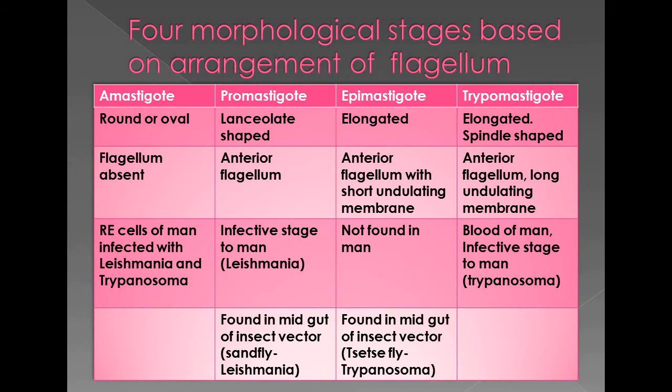So the four forms are: Amastigote, Promastigote, Epimastigote, and Trypomastigote. Always remember the fourth one is Trypomastigote, not Trypanosoma-mastigote. Trypanosoma is the parasite, and Trypomastigote is the morphological stage.